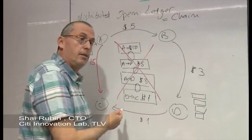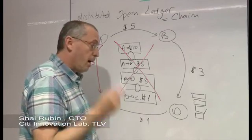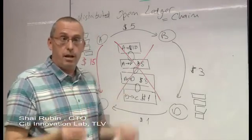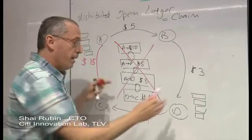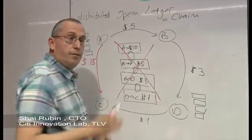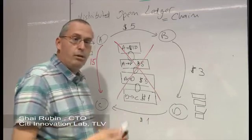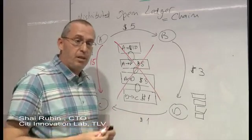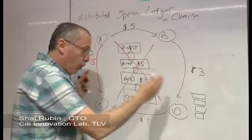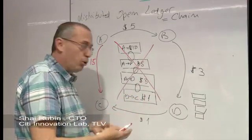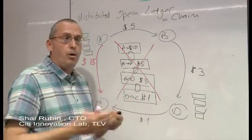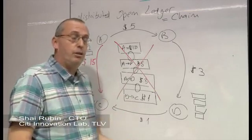However, we created another problem, or a new problem. Now when there are various copies of the ledger in the network, we need to make sure that all these copies are synchronized and all the participants in the network see the same copy of the ledger, the same version of the ledger.